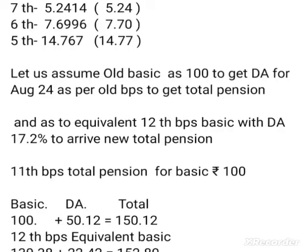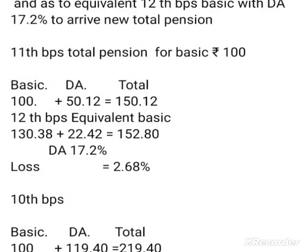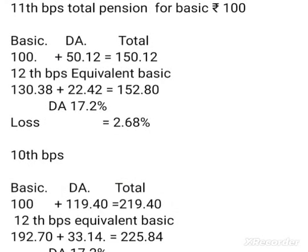Let us assume old basic as 100 to get DA from August 2024 as per old BPS, to get total pension equivalent to 12th BPS basic with DA 17.2%, to arrive at new total pension. For 11th BPS, total pension for basic rupees 100: basic plus DA is 100 plus 50.12 = 150.12. The 12th BPS equivalent basic comes to 152.808, so the loss is 2.681. There is a loss on the 11th BPS.